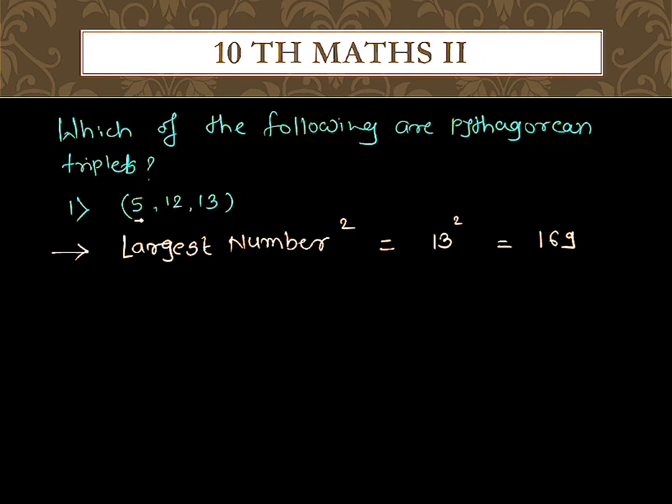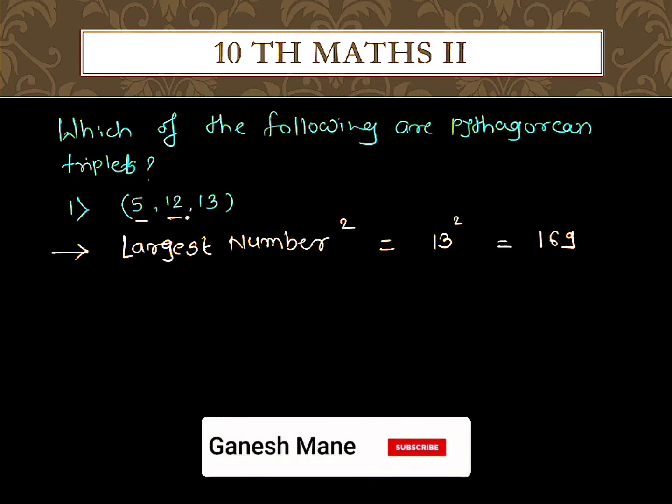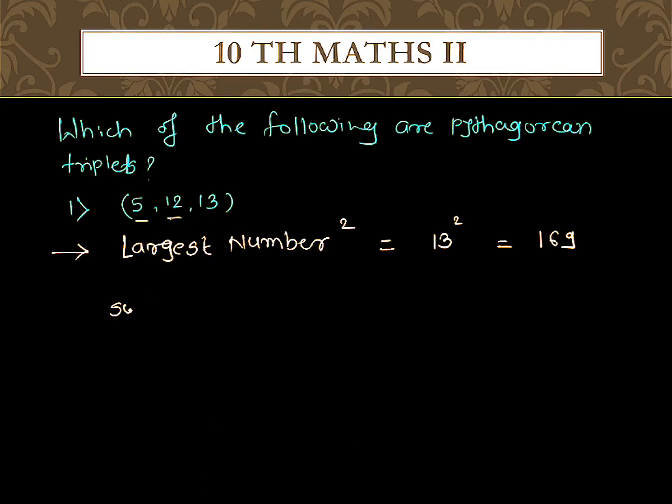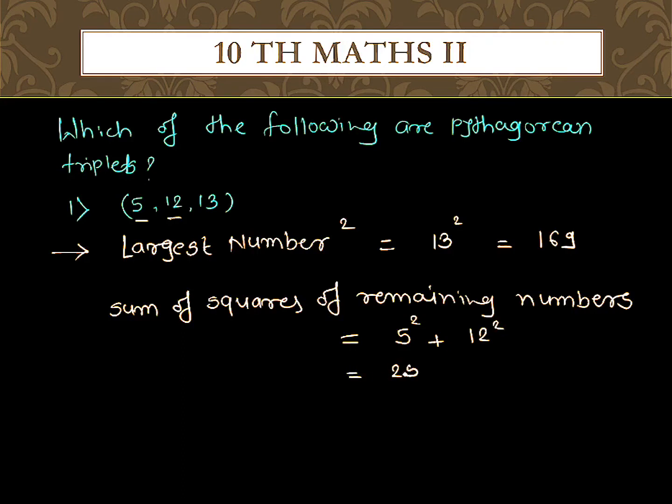Now the remaining two numbers are 5 and 12. We need to find the sum of squares of the remaining two numbers. So 5 squared is 25, plus 12 squared is 144.